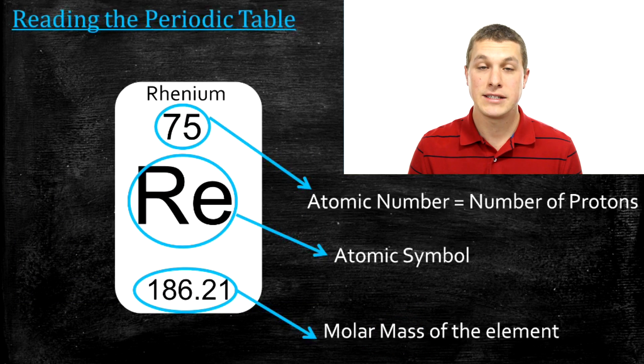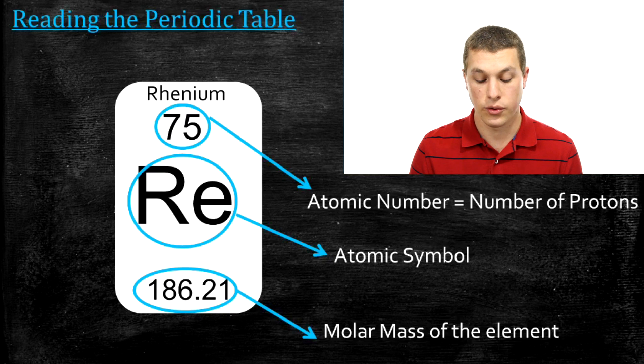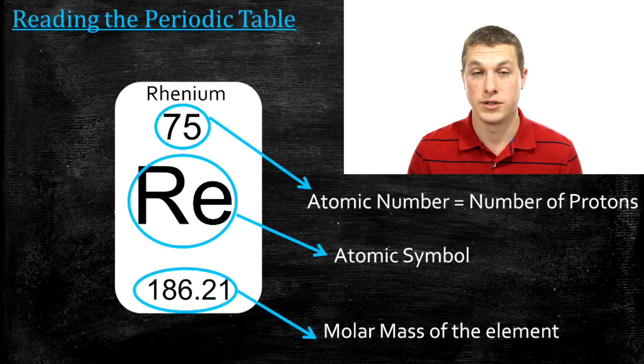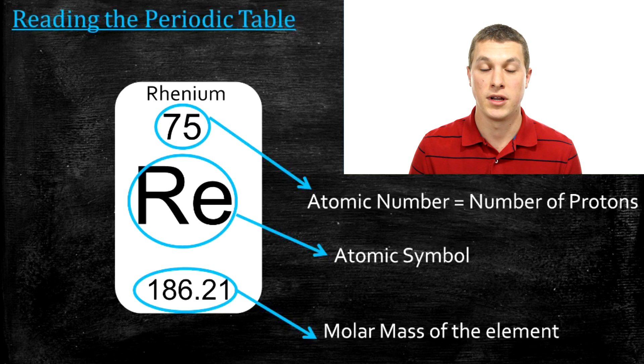So let's review. At the very top of our rectangle, or our square, we see the atomic number, which is the number of protons. And that's what defines an element. If you change the number of protons, you change what an element is.